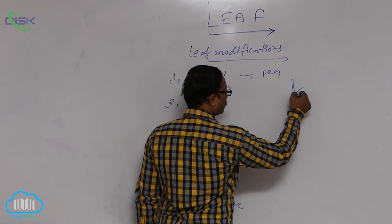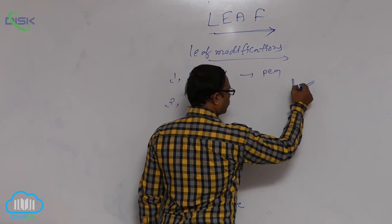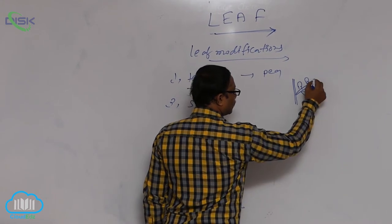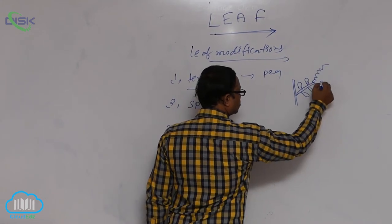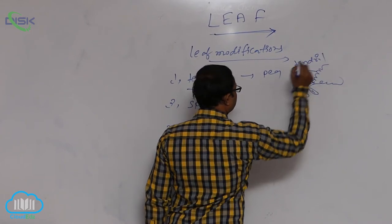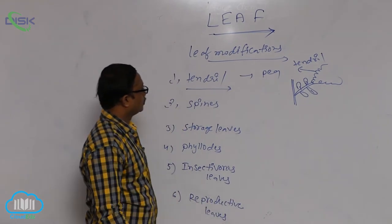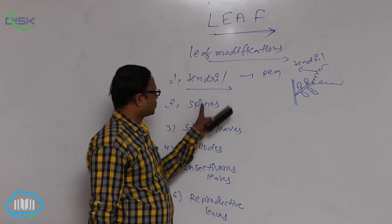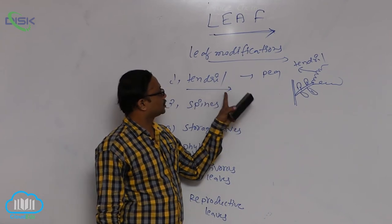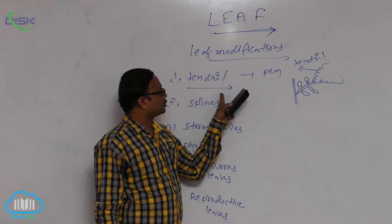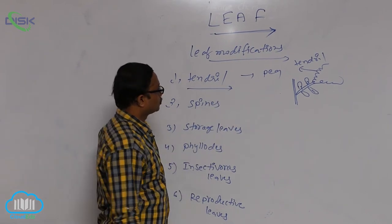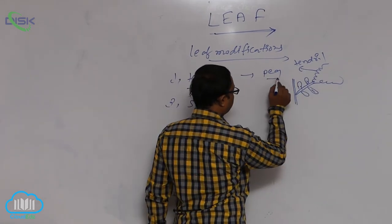In pea plant, it is a compound leaf. Compound leaf means they are composed of leaflets. Terminal leaflets are converted into tendril. Tendrils are small, thin, delicate, smooth structures — sensitive structures used for climbing purpose of the plant. In pea plant, terminal leaflets are converted into tendril.